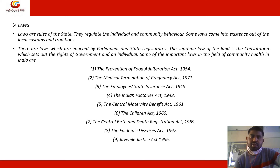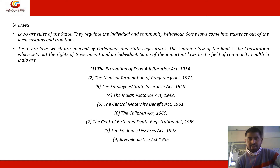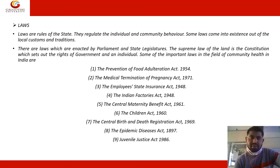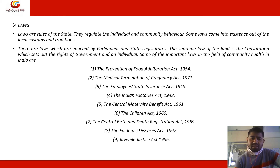Laws are the rules of the state that regulate individual and community behavior. Some laws come into existence out of local customs and traditions, such as the Hindu Marriage Act and Triple Talaq laws. There are also laws enacted by Parliament and state legislatures. The supreme law of the land is the Constitution, which sets out the rights of the government and individuals. Some important laws in the field of community health in India include: Prevention of Food Adulteration Act 1954, Medical Termination of Pregnancy Act 1971, Employees' State Insurance Act 1948, and Indian Factories Act 1948.